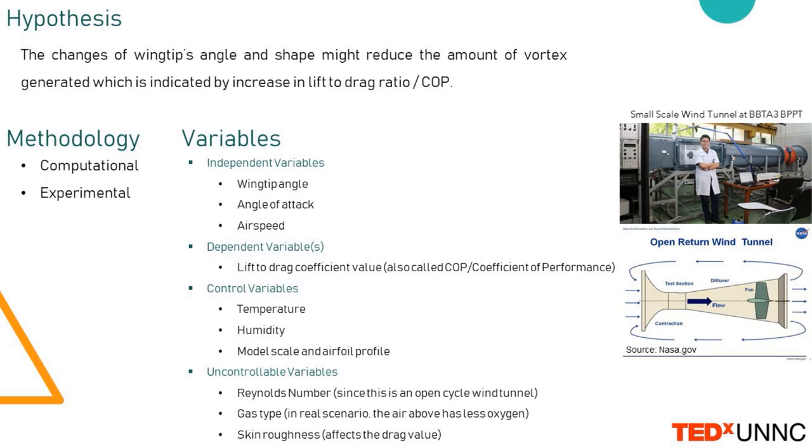The second uncontrollable variable is gas type. At different atmospheric altitudes, the gas percentage will differ, and in an open-return wind tunnel we cannot simulate that — the air is not reused, it's blown away. Gas type also correlates to the last uncontrollable variable: skin roughness, which affects the drag value. The skin roughness issue arises mainly because I'm using a 3D printed ABS polymer model, which has different surface roughness compared to the alloy used to cover actual aircraft wings.